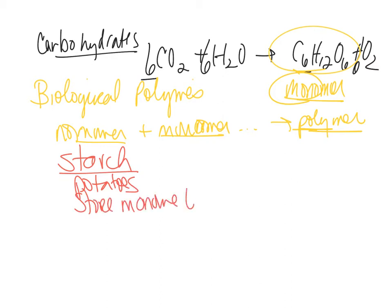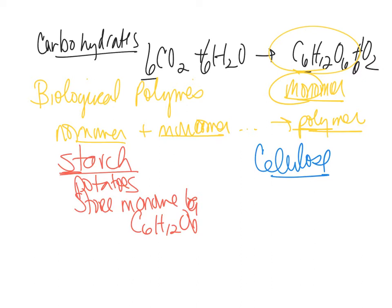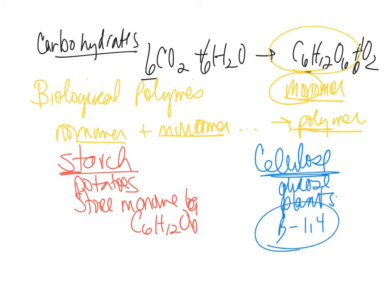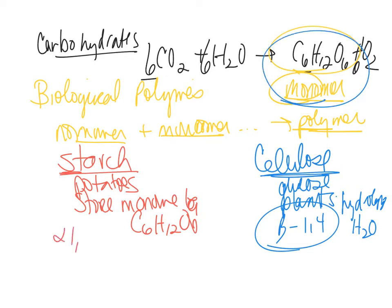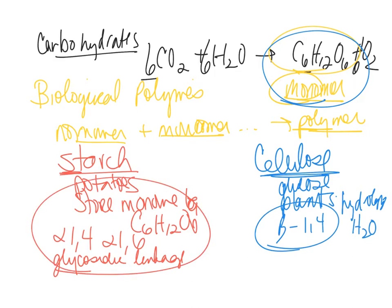We store our monomer glucose, C6H12O6, as starch. There's also the cellulose polymer — that's also glucose — and that's how plants store glucose in their cell walls. We can't break down cellulose. It has a beta 1,4 linkage and we cannot hydrolyze it; we cannot add water to break that bond to release the monomer sugar. Starches have alpha 1,4 and alpha 1,6 linkages — called glycosidic linkages — and we can hydrolyze those. This is how energy works.